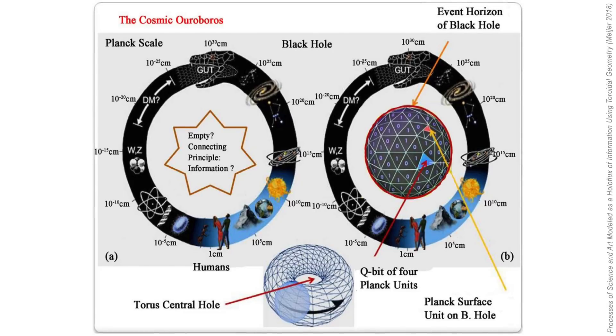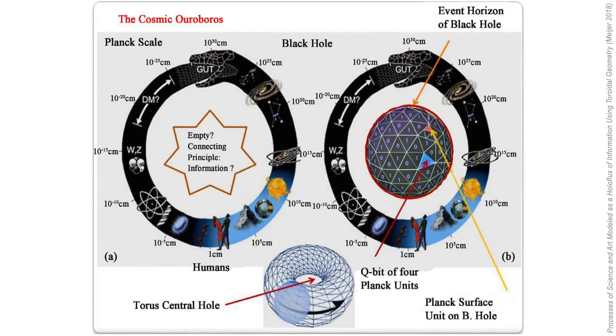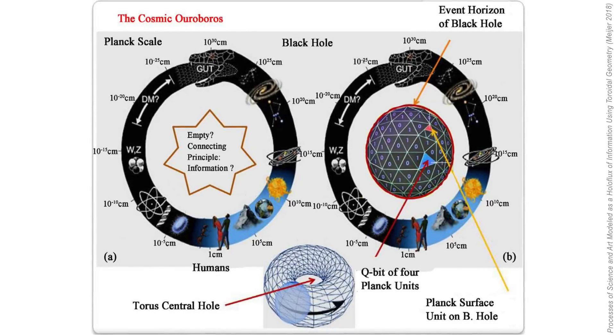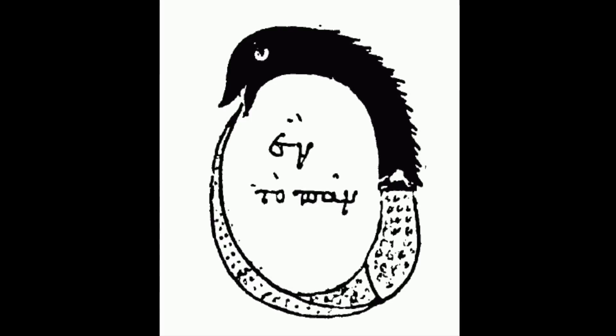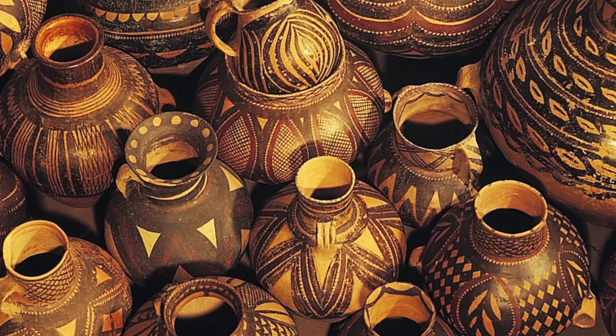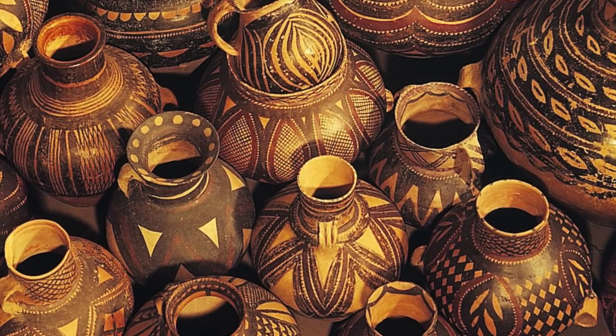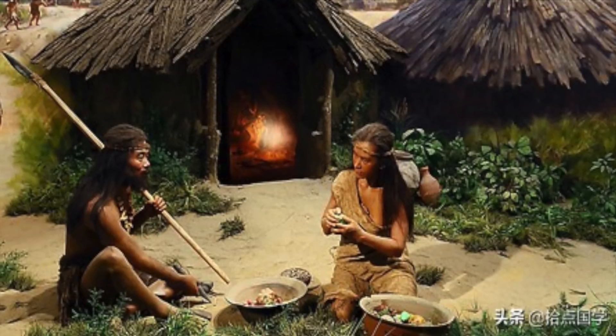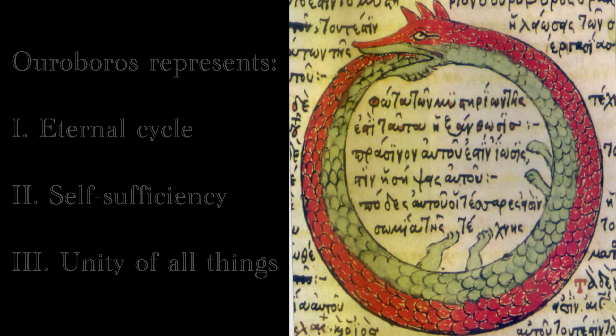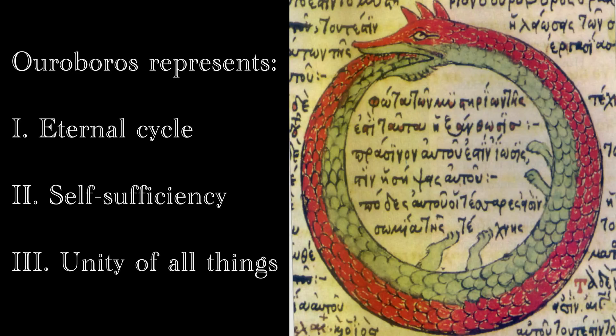Now, before we dive into the physics, first let's touch on the history of the symbol itself. The Ouroboros is my favorite mythological symbol. That's probably obvious, given this channel's crest. The oldest depiction of the Ouroboros was found on pottery from the Yangtzeo people in China as early as 5000 BC. The Ouroboros represents several concepts, including one, eternal cycle, two, self-sufficiency, and three, unity of all things.